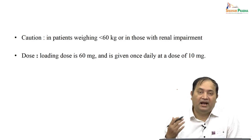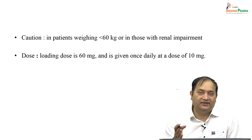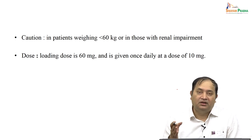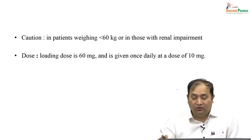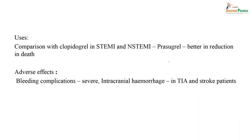Prasugrel should not be prescribed for patients with compromised kidney function. It is contraindicated in patients with lower body weight of less than 60 kg or a history of renal impairment. The loading dose is 60 mg once, followed by a maintenance dose of 10 mg per day. Compared to clopidogrel, it shows better reduction in death — for STEMI and non-STEMI endpoints. However, the most common adverse effect is bleeding or severe intracranial hemorrhage, especially in transient ischemic attack or stroke patients. One has to be careful.